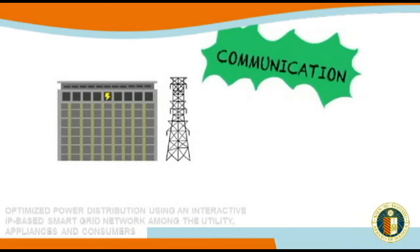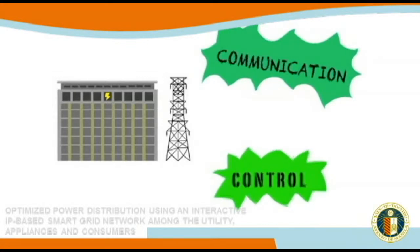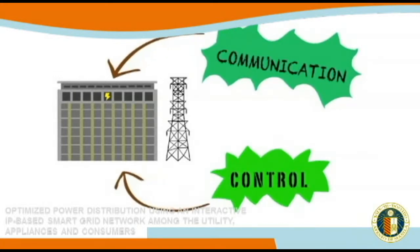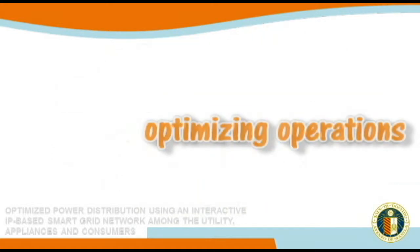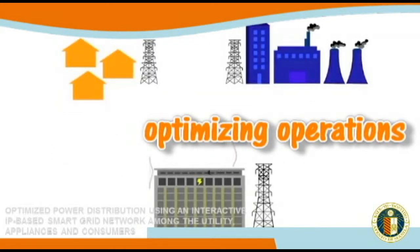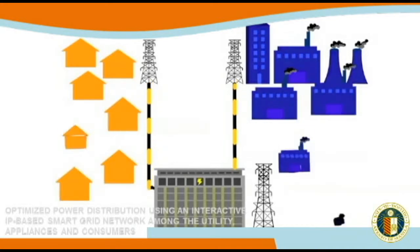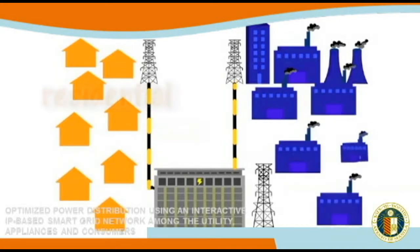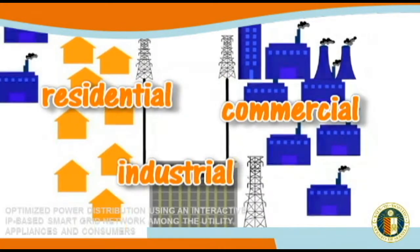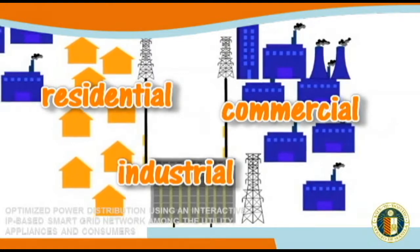Smart Grid builds on many of the technologies already used by electric utilities but adds communication and control capabilities that will optimize the operation of the entire electrical grid. The Smart Grid's key components include the residential households, commercial spaces, and industrial players.